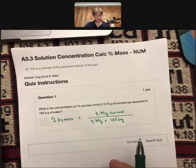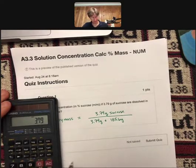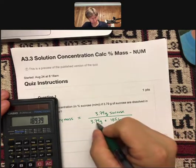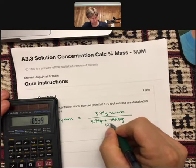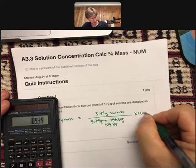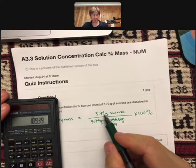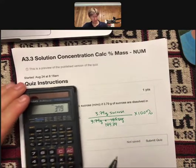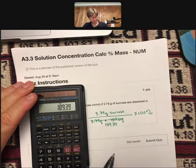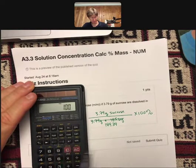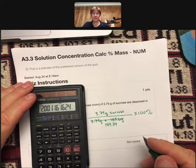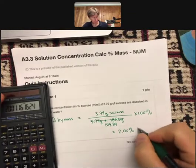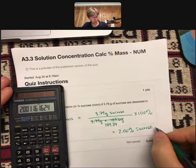And I'll add those up 3.79 plus 185.6 I get 189.39 and then it's times 100%. So now it's going to be 3.79 divided by 189.39 and then times 100 and I get 2.00% sucrose mass by mass.